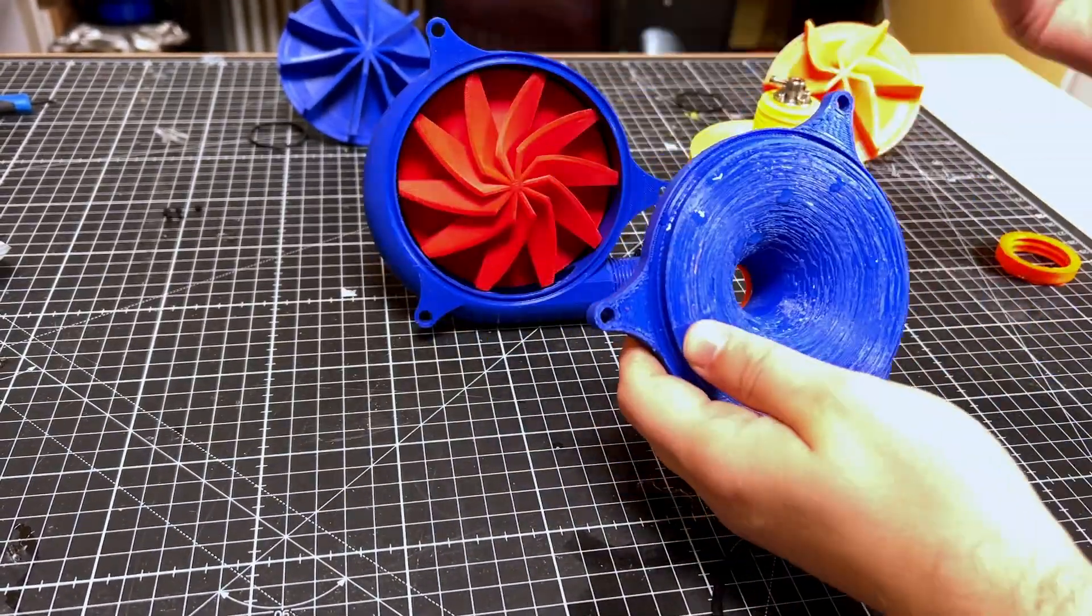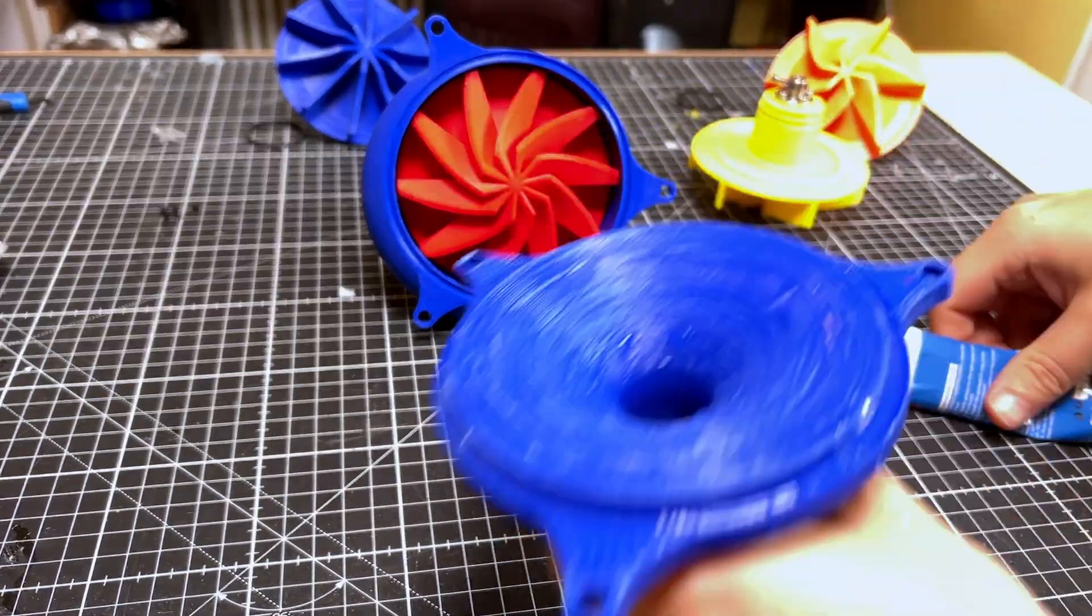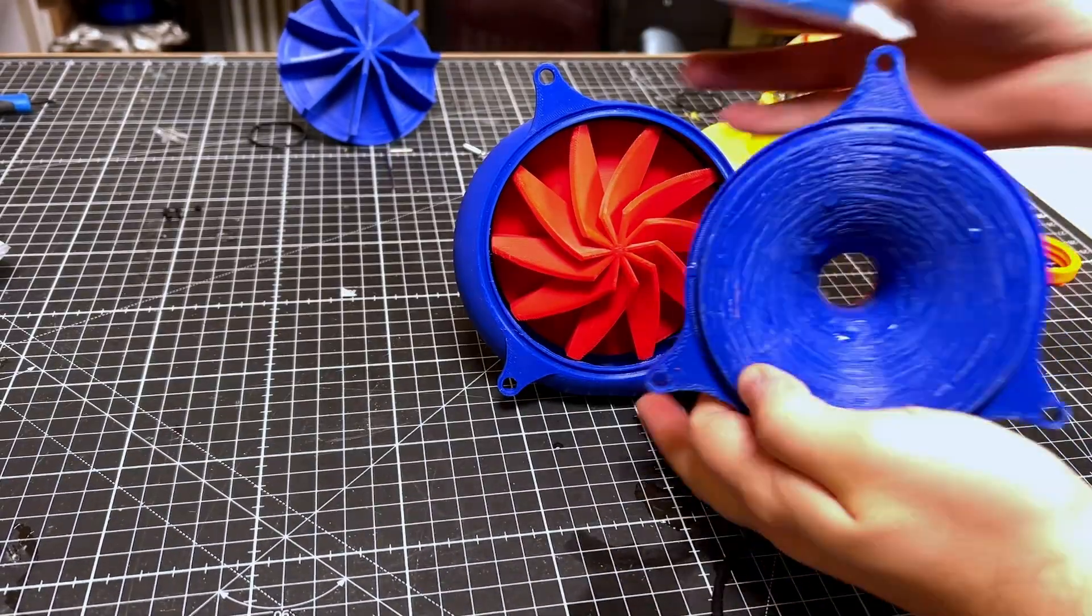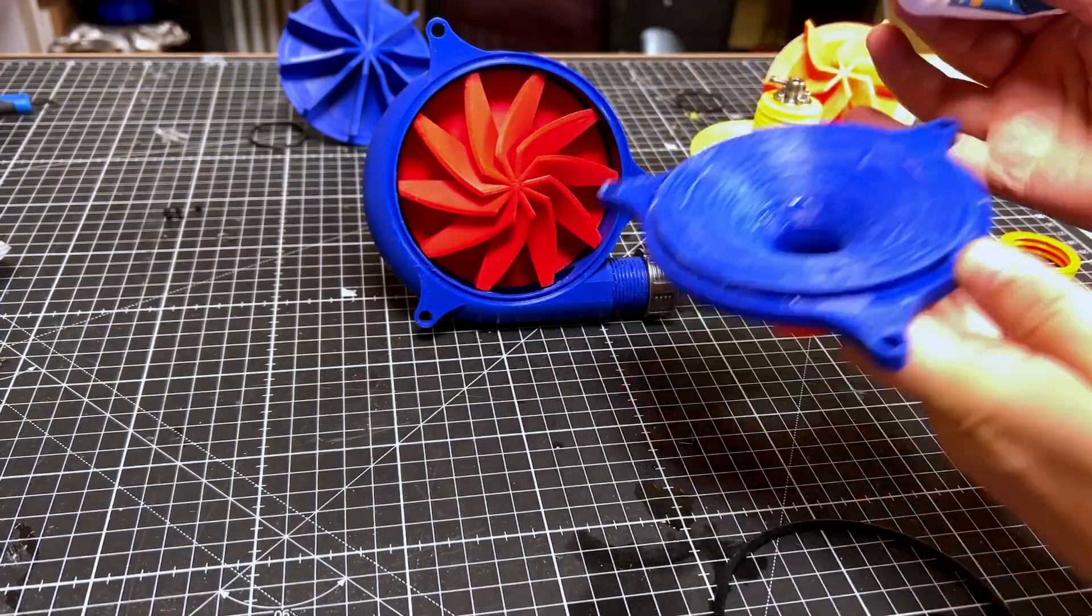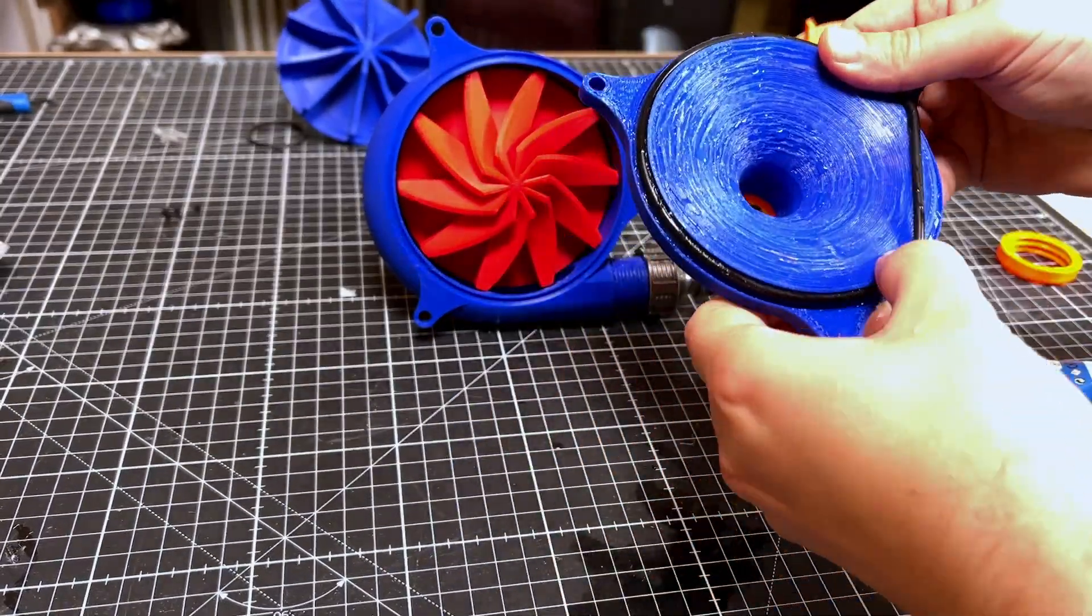And while I'm at it, I might as well also grease the O-ring that sits between the lid and the main case. Silicon grease is great because it's fairly inert, so it's compatible with most 3D printing plastic.